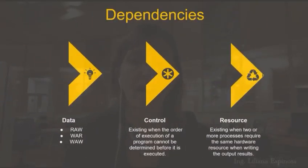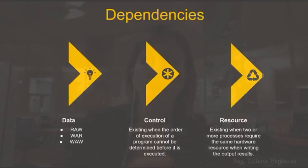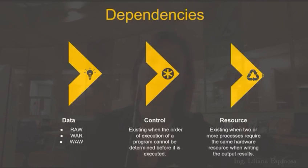We need to take care of RAW because we cannot avoid it in any way. The control dependency is when we have a control in the program — for example, an if statement and then a then part. We cannot execute the if statement and the then part at the same time because we are going to have a hazard or a problem in the execution of the program.